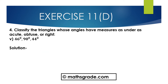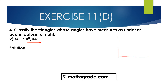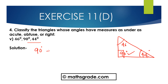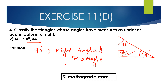Now question number 5th part: 46 degrees, 90 degrees, and 44 degrees. In this triangle, one of the angles is 90 degrees. We know any triangle that has one angle equal to 90 degrees is said to be a right angle triangle. So this triangle is a right angle triangle.